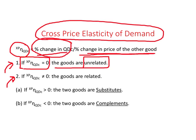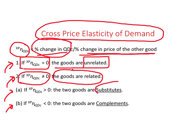If cross price elasticity of demand turns out to be a non-zero number, the goods are related and can be further subclassified as substitutes or complements. For example, if the price of tea increases, coffee becomes relatively less expensive and demand for coffee rises — cross price elasticity of demand will be a positive number, reflecting a positive relationship when two goods are substitutes.